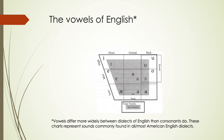Looking at the vowel chart for English, you'll notice descriptions along the top — front, central, and back — referring to backness. On the left you see high, mid, and low: high vowels involve lifting your tongue up, mid vowels are produced with your mouth in a neutral open position, and low vowels like 'ah' involve lowering your jaw. The ones on the outside are tense vowels like 'ee,' where you feel your jaw tense, versus the lax ones inside where your mouth is more relaxed.